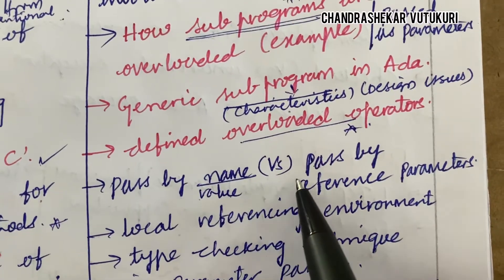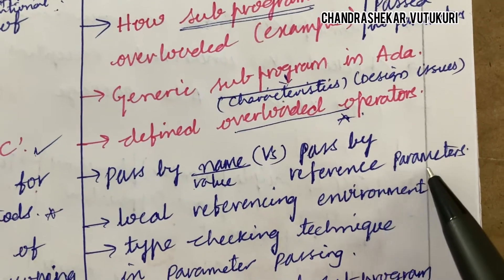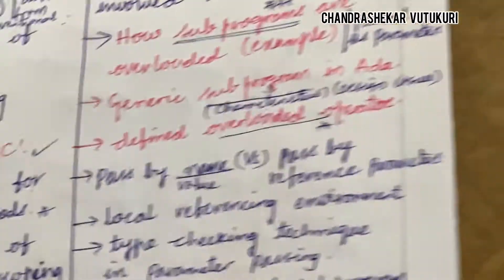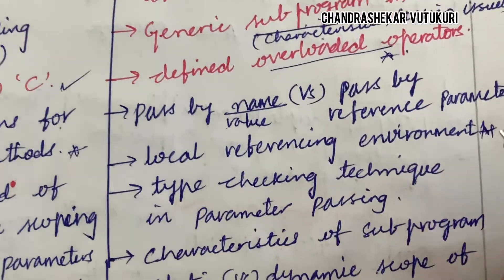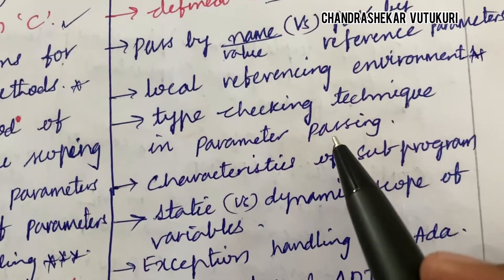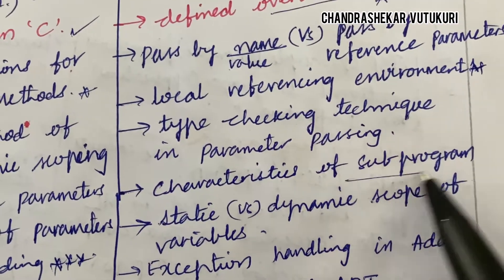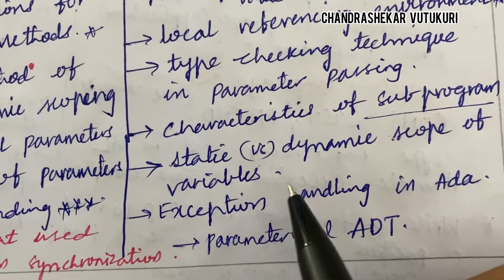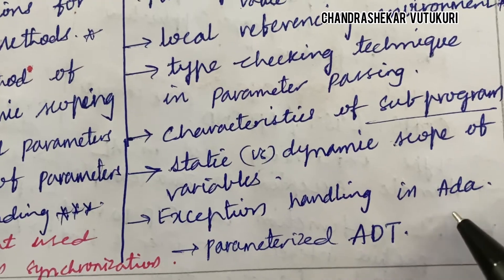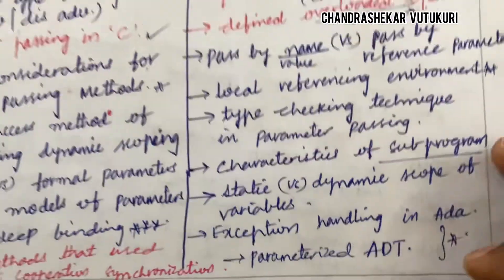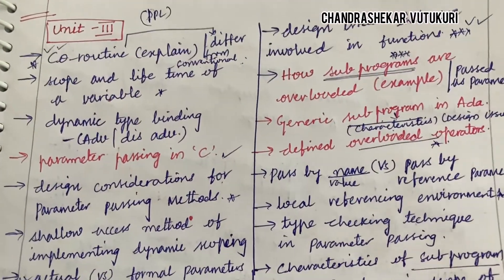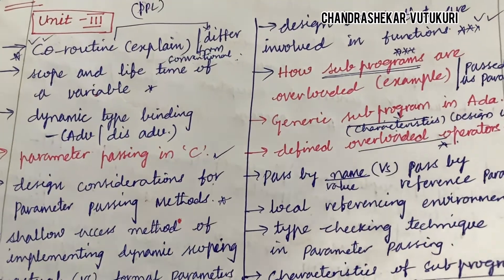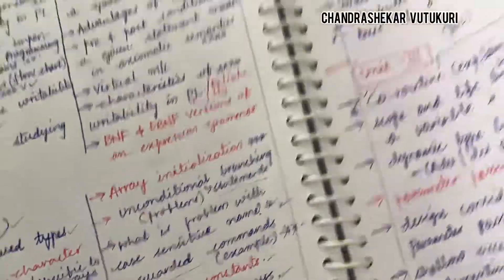Pass by name versus pass by value with differences, pass by reference parameters, and local referencing environment are short and sure questions. Type checking technique in parameter passing, characteristics of subprogramming, static versus dynamic scope of variables, exception handling in ADA, and parameterized ADT — these are all said to be short and long questions for the course PPL under Unit 3.